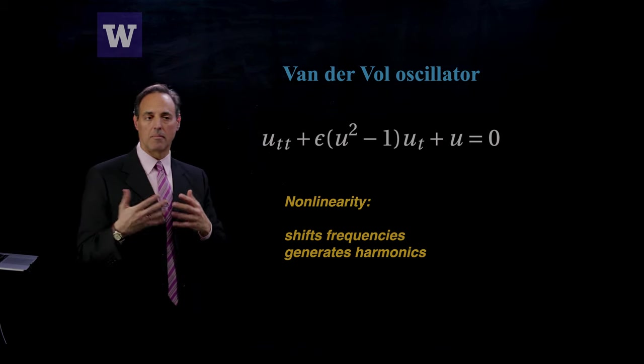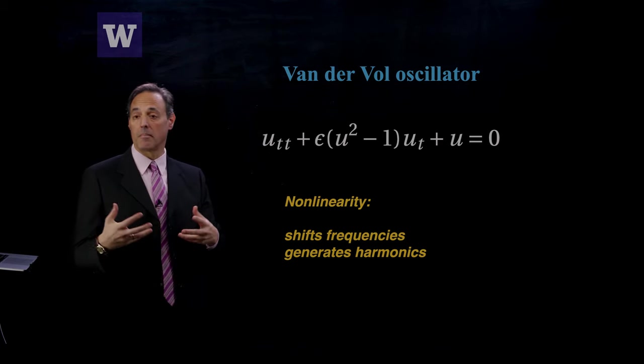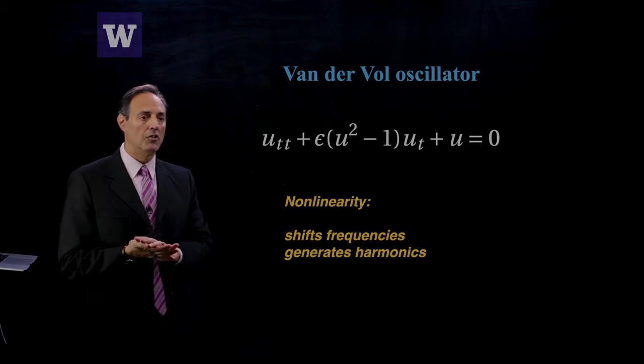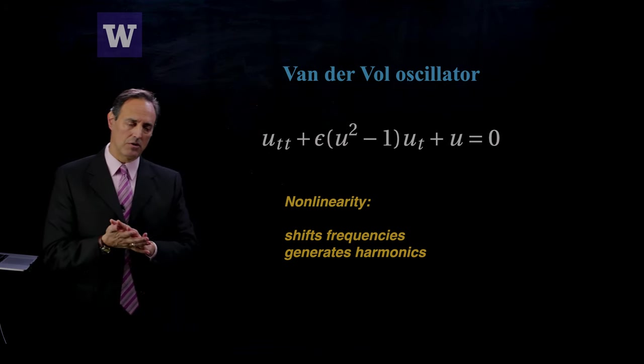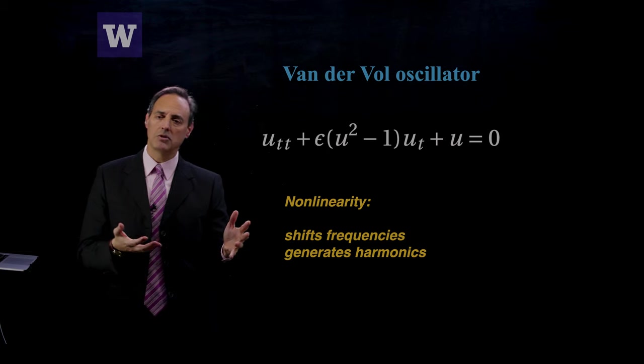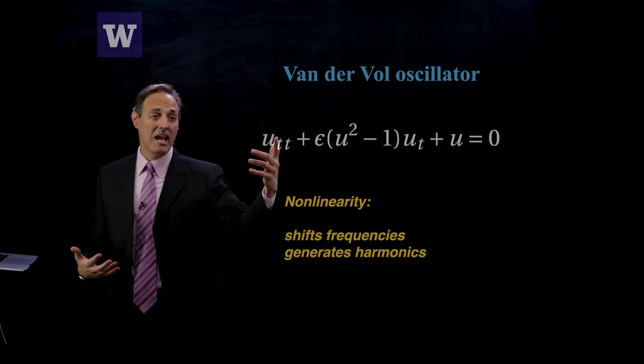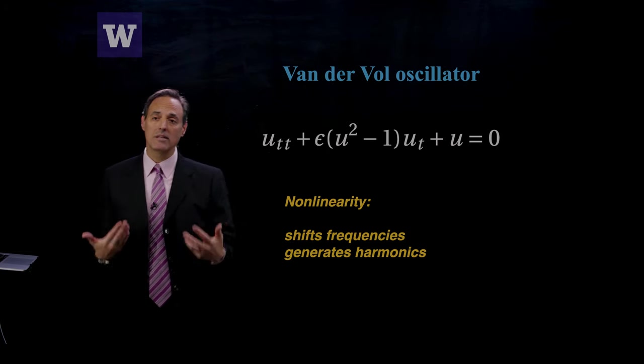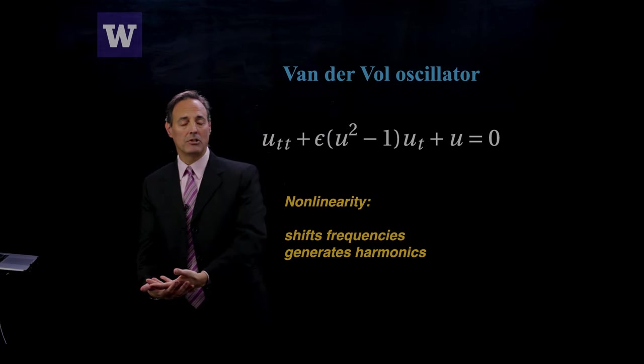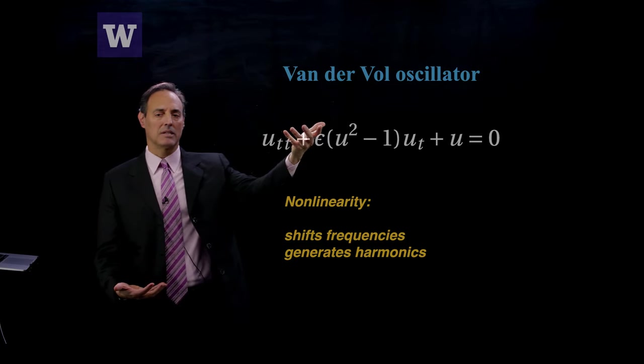The nonlinearity does a couple things that we want to understand. It shifts frequency, it generates harmonics, and in this case there is a transient effect. If I have a low amplitude it starts to grow until it saturates to that limit cycle. If it's very high it decays until it gets to the limit cycle.